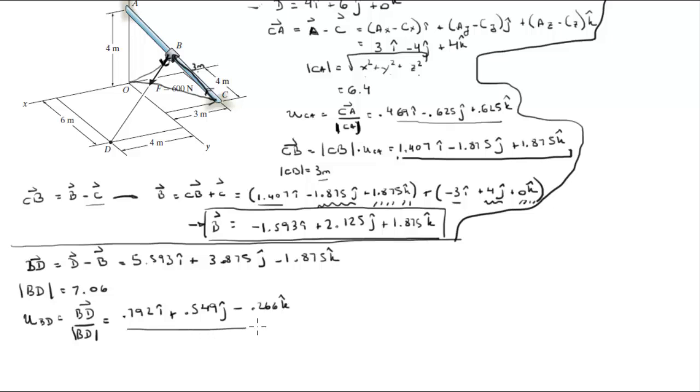Now that we have this unit vector, what we have to do is multiply it by the magnitude that we're given, which is 600, to find the Cartesian vector form of the force. The Cartesian vector form of the force is the magnitude times the unit vector, and it comes out to be 475.2i plus 329.4j minus 159.6k. Final answer.